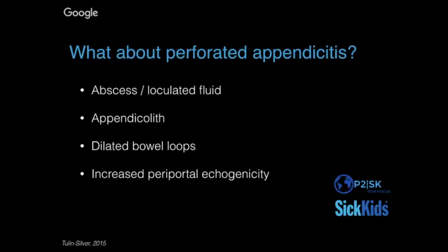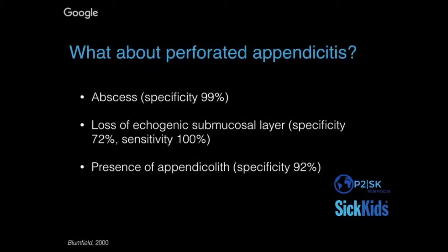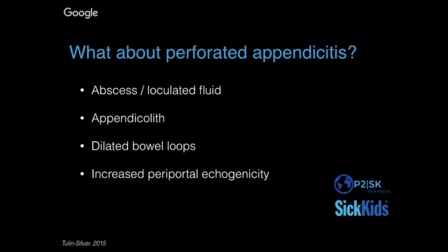What sometimes makes appendicitis such a challenging scan is that it may be perforated, in which case you won't see the appendix itself. It's more common in young children — under age eight, 62% present with perforated appendicitis, versus older kids over eight who present 29% of the time. Bloomfield et al. in 2000 classified findings suggestive of perforated appendicitis: abscess has 99% specificity, loss of echogenic submucosal layers has up to 100% sensitivity, appendicolith has 92% specificity — and below age five, an appendicolith is reportedly 100% specific.